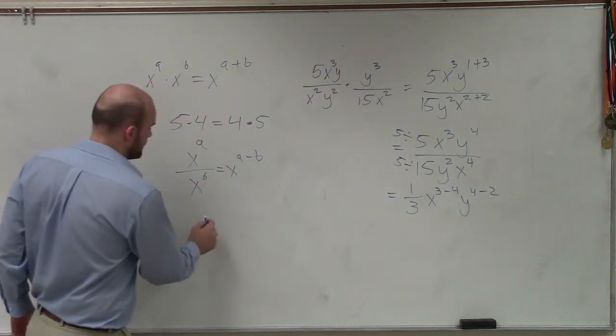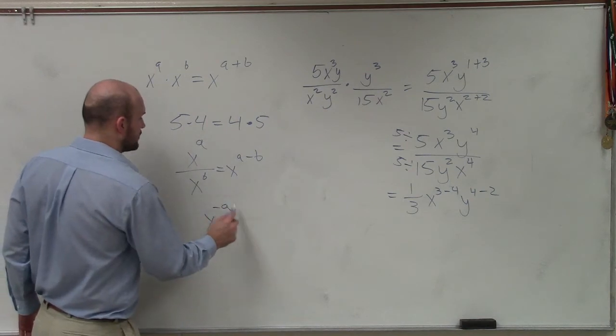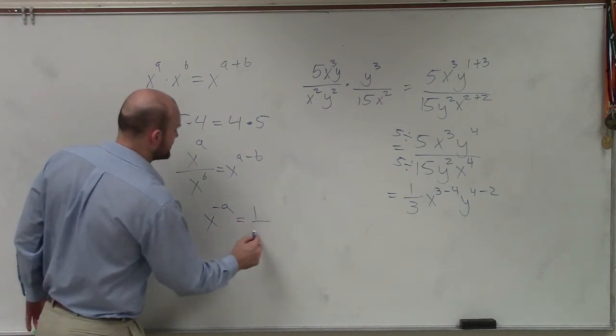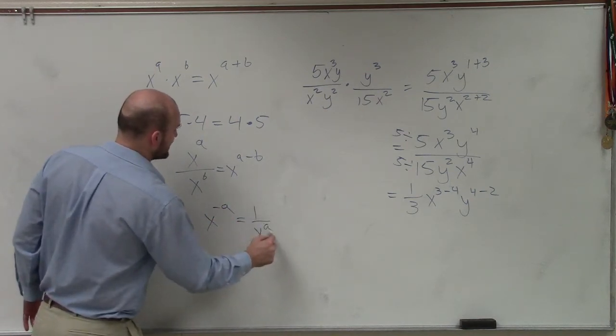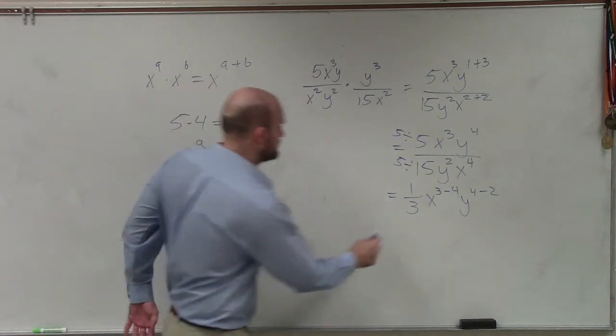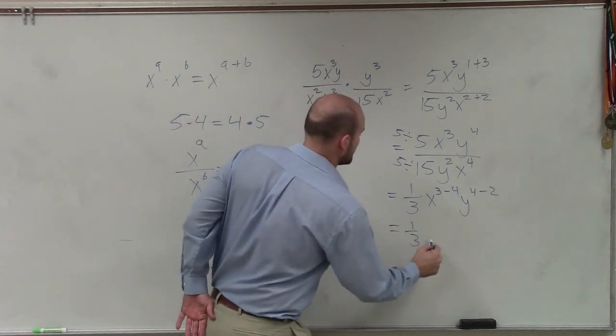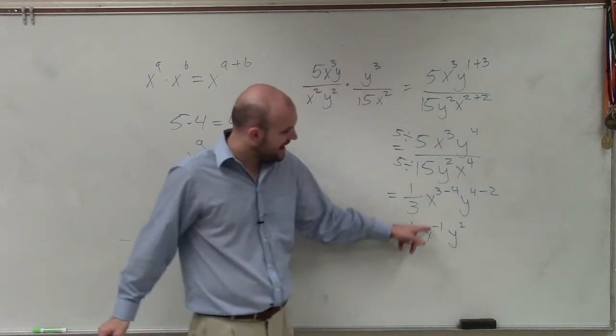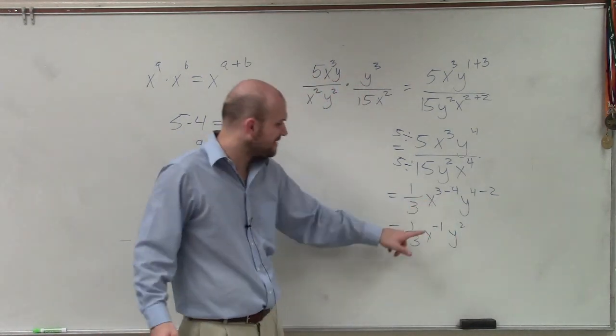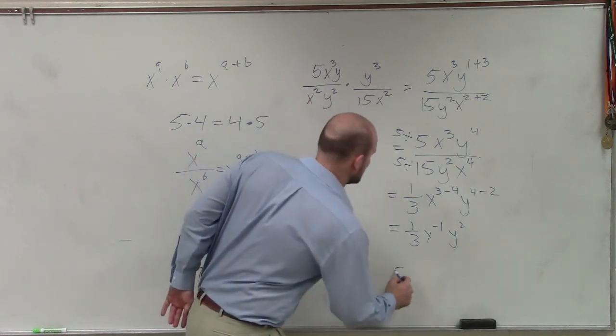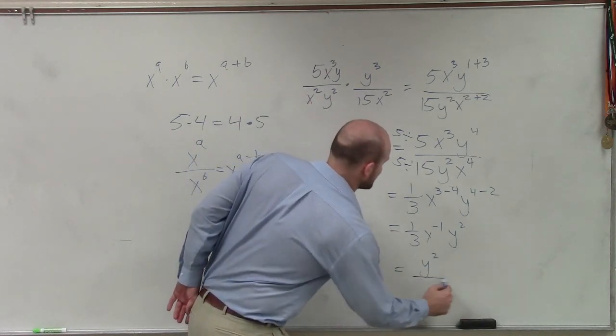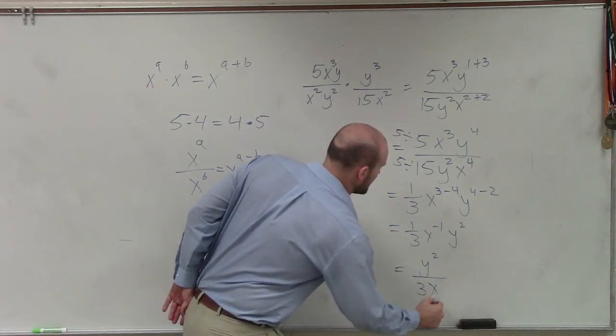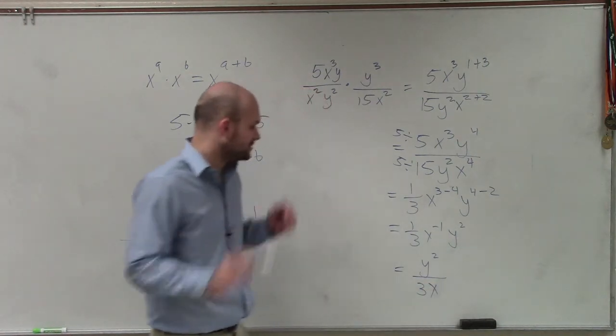Now we have to remember, when we have negative exponents, or negative powers, we have to rewrite them as positive in the denominator. So therefore, I have 1 third x to the negative first, y squared. Since my x is negative to rewrite positive, I'm going to have to rewrite it in the denominator. So my final answer is going to be y squared over 3x raised to the first power, which I'll just leave it as that.